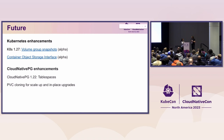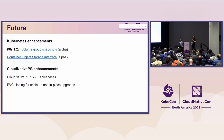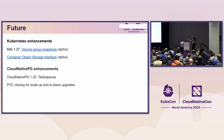For Cloud Native PG, we're working on version 1.22, which will be released by end of year and will support table spaces — a vertical scalability feature that will enable better management of very large databases. We're also just scraping the surface of what the volume snapshot CSI drivers are able to offer. The next step will be PVC cloning — so imagine scaling up just by cloning volumes instead of running PG base backups — and these will also be used for in-place upgrades.